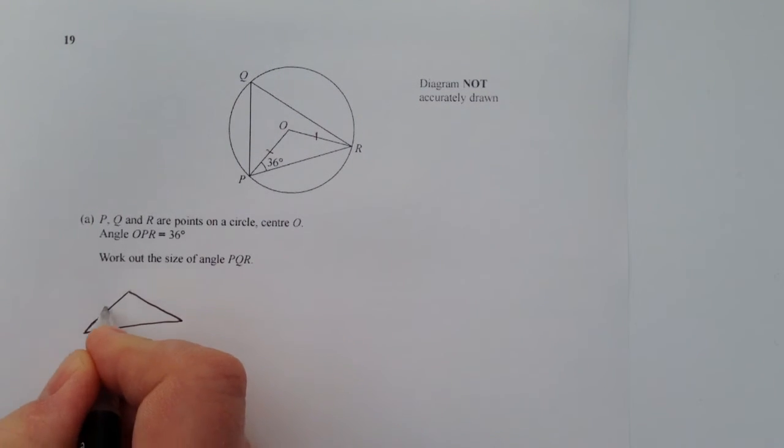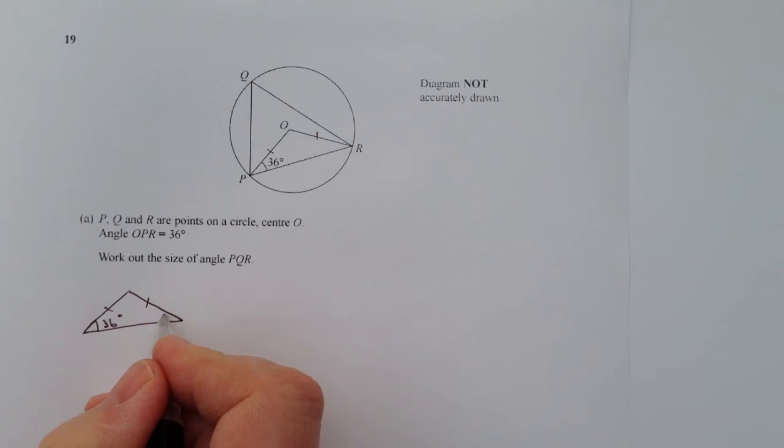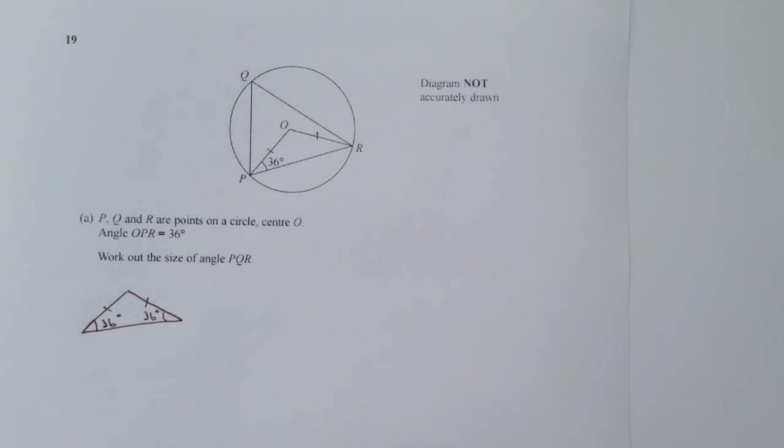Okay, well if it's an isosceles triangle, which it is, then it also means the bottom angle on the right is also 36 degrees. If we add those up and take them away from 180...